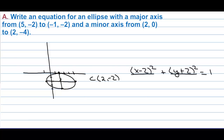The b is 2 units going up and down, so we put 4 under the y because it goes along the y-axis. The a is 3 units, so under the x we put 9, and we have the entire equation.